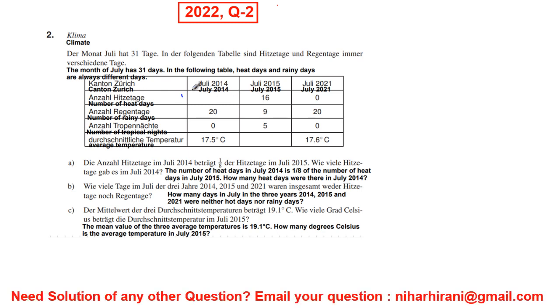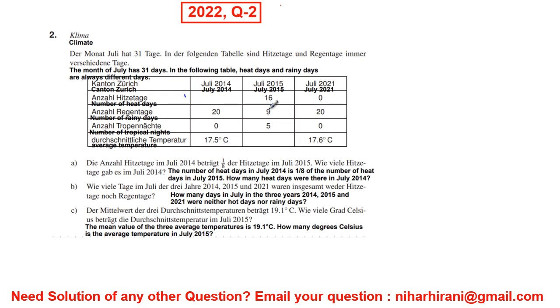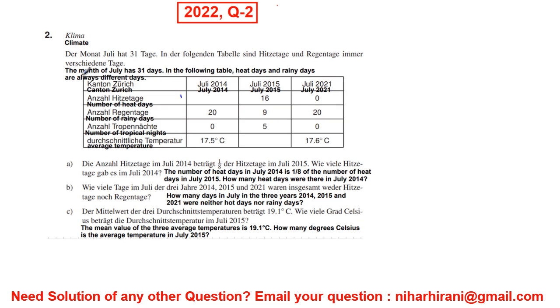Hello, let us solve this one. Here I have written the question in German and English both. I will explain in English. So here the month of July has 31 days. In the following table, heat days and rainy days are always different days.